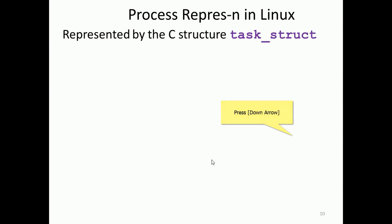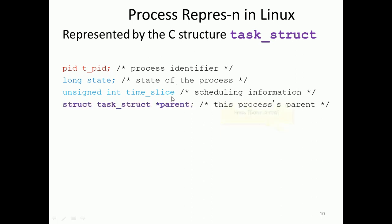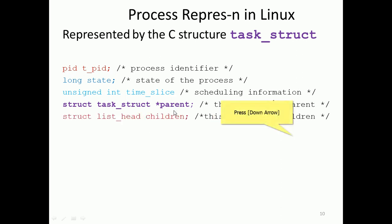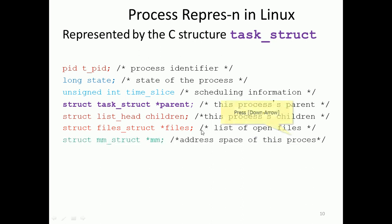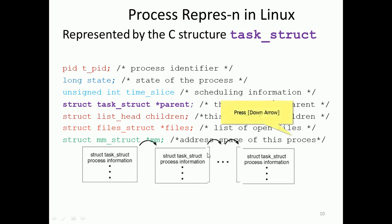Process representation in Linux: a task structure is created with fields including PID (process ID), long state (the five states we discussed), and unsigned int time_slice for scheduling information. The task_struct contains a pointer called 'parent' for the parent process, a list_head 'children' for child processes, a 'files' field for the list of open files, and a 'memory' field for the process's memory address space.